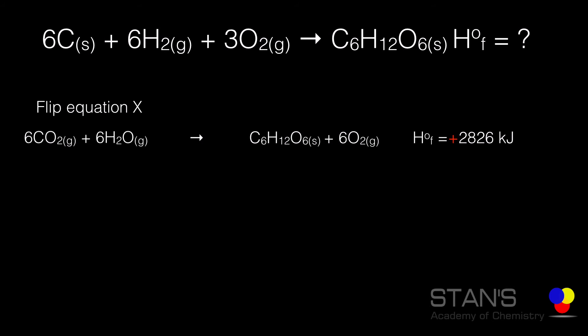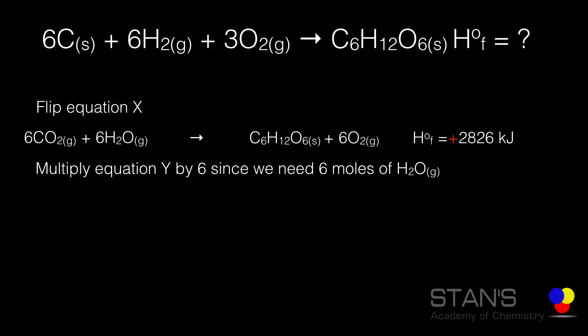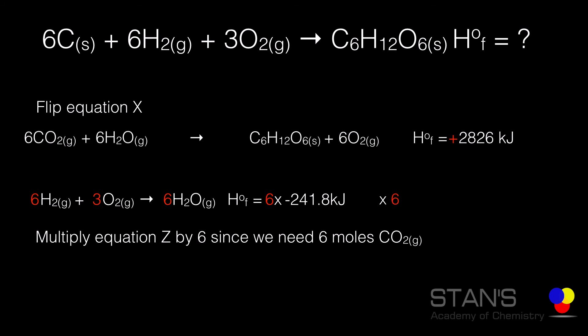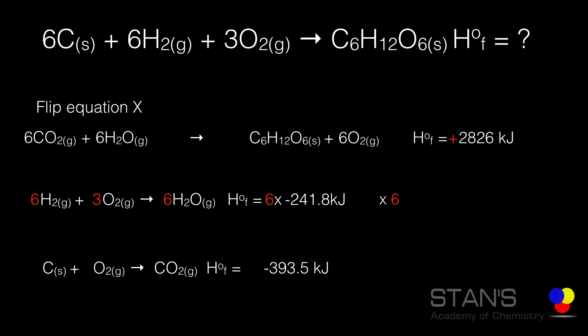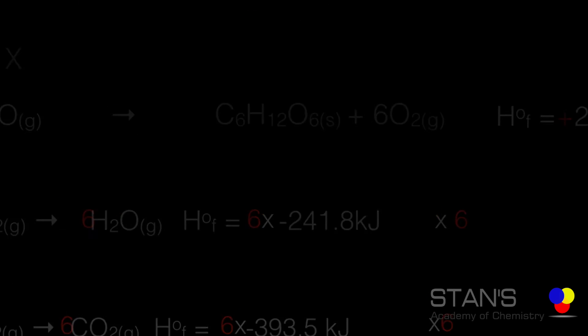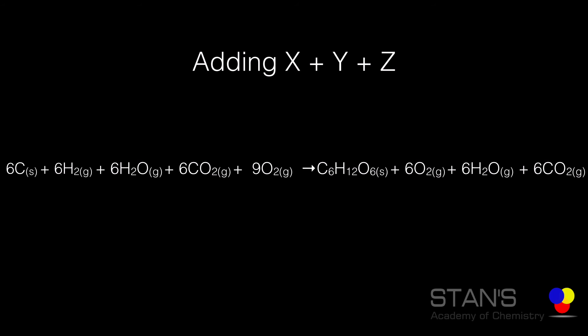In the flipped combustion equation there are six moles of carbon dioxide and six moles of water. So we will use the standard enthalpy of formation of water for six moles of water, meaning we multiply the water formation equation by six to produce six moles of H₂O as needed. Similarly, we multiply the carbon dioxide formation equation by six to produce six moles of CO₂.